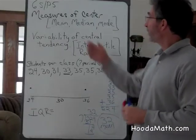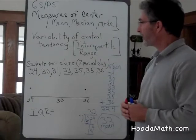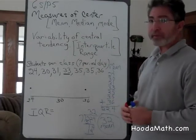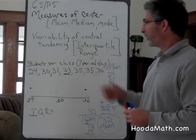In statistics, we have measures of center: the mean, the median, and the mode. We also have variability of central tendency, the interquartile range.